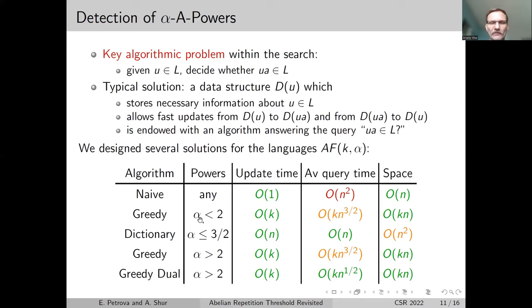For the case of small α, we have a greedy algorithm and a dictionary algorithm. The dictionary algorithm is much faster, but it has these guarantees only for the case when α is at most 3/2. It works only with sufficiently short words because of space requirements. The greedy algorithm is slower but can work with words as long as you can process them. For the case of big α, there is a big asymmetry - to detect dual abelian powers is much easier.